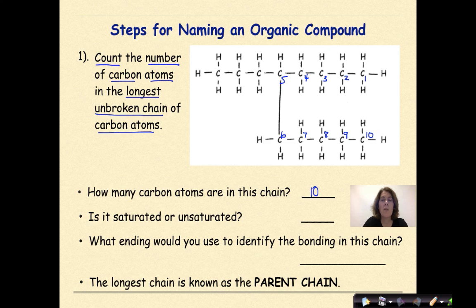And is it saturated or unsaturated? Well, if it's saturated, there's all single bonds between the carbons in the parent chain. If it's unsaturated, you're going to see a double or triple bond. So the correct answer here is saturated, because we have all single bonds between the carbon atoms in the parent chain. What ending would you use to identify the bonding in this chain? We are looking for the ending of A-N-E. The longest chain is known as the parent chain.